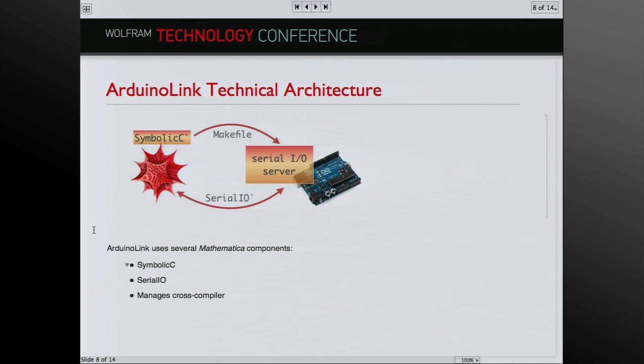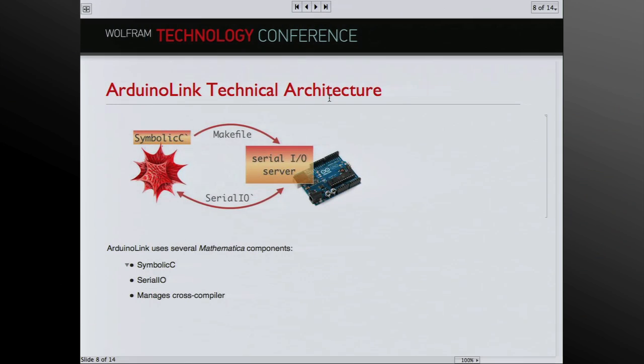So here's a very high-level picture of what's actually going on. So here we have Mathematica. And Mathematica is using the symbolic C package to create, to generate a serial I.O. server. And the server is just a program that runs on the Arduino. And it listens for incoming data from Mathematica over the serial connection. And the way we send data and receive data on the serial connection is through serial I.O., which is a package written for Mathematica. And it makes Mathematica symbols for easily sending and receiving serial data. And it also manages the cross-compiler. So you don't actually have to worry about uploading it to the device or doing any of those rote tasks. Those are all done for you.